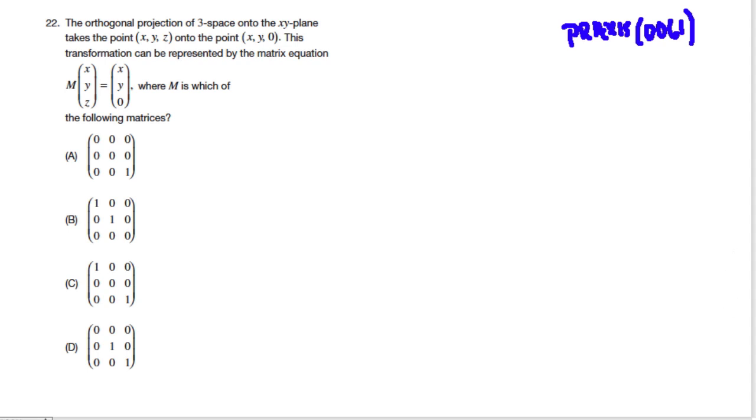It says the orthogonal projection of the 3-space onto the xy-plane takes the point xyz onto the point xy0. This transformation can be represented by the matrix equation M, that's our matrix, right, times xyz equals xy0, where M is which of the following. So we want to say which matrix is M equal?